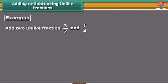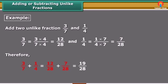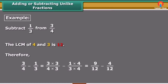For example, 3 upon 7 and 1 upon 4 are two unlike fractions. In order to add them, we first find their equivalent fractions with the same denominator — these are 12 upon 28 and 7 upon 28. Note that 28 is the LCM of 7 and 4. In another example, to subtract unlike fractions, we find equivalent fractions of 3 upon 4 and 1 upon 3 using the LCM of 4 and 3, which is 12. Therefore, the subtraction of 3 upon 4 and 1 upon 3 is 5 upon 12.